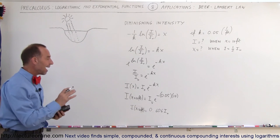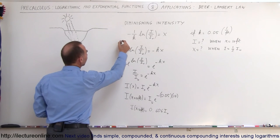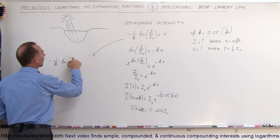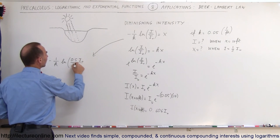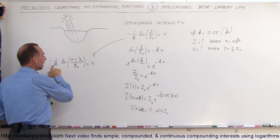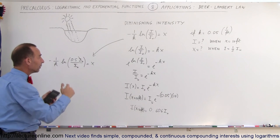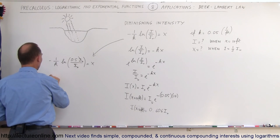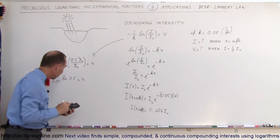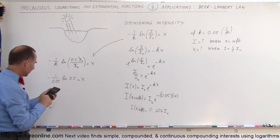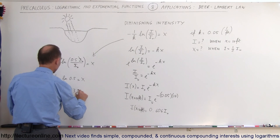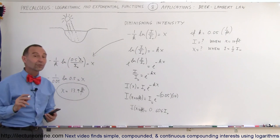Now, how far do we have to go down for the intensity to be half the original? We use the original equation: x = -(1/k) × ln(I/I₀). Since I = 0.5 × I₀, the ratio I/I₀ = 0.5, and the I₀ terms cancel. So x = -(1/0.05) × ln(0.5). Taking the natural log of 0.5, dividing by 0.05, and negating gives x = 13.9 feet, rounded to one decimal place.